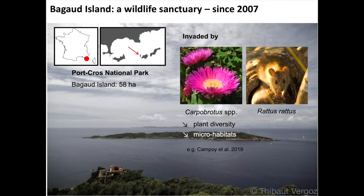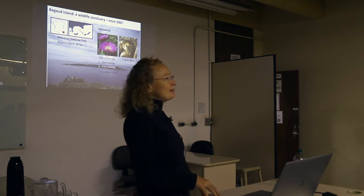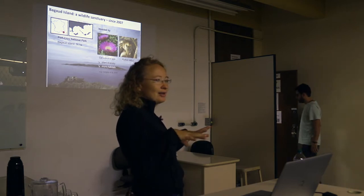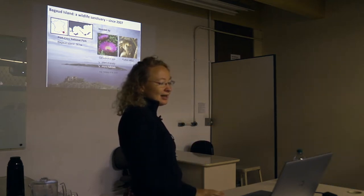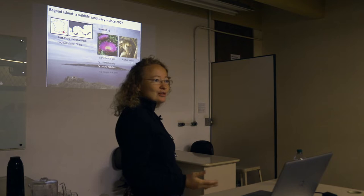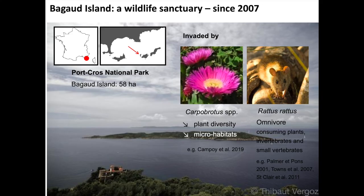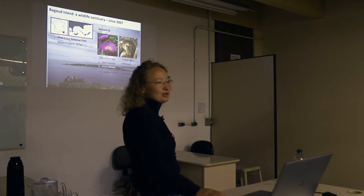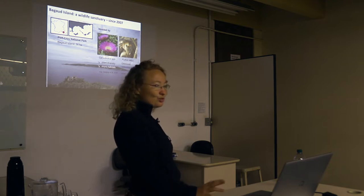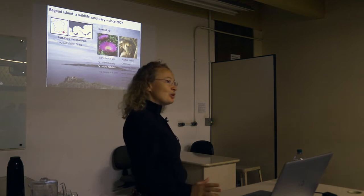The two species are the Carpobrotus, which is also called ice plant. It's a plant that covers the ground very much and produces a lot of litter and produces really thick carpets and doesn't allow native species to grow with it. So it decreases a lot of plant biodiversity at the local scale and microhabitats. The rat is an omnivorous species. It can eat plants, invertebrates, and small vertebrates. It's going to be eating whatever is available, so it can change its diet depending on what's available.